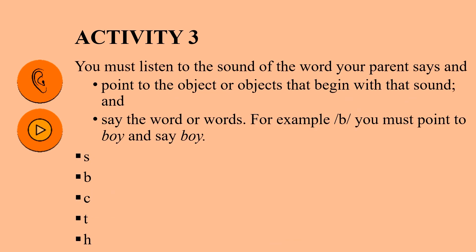Activity 3. You must listen to the sound your parent says and then point to the object or objects that begin with that sound and say the word or words. For example, 'b' — you must point to the word 'boy' and say 'boy'. Now point to objects that begin with...